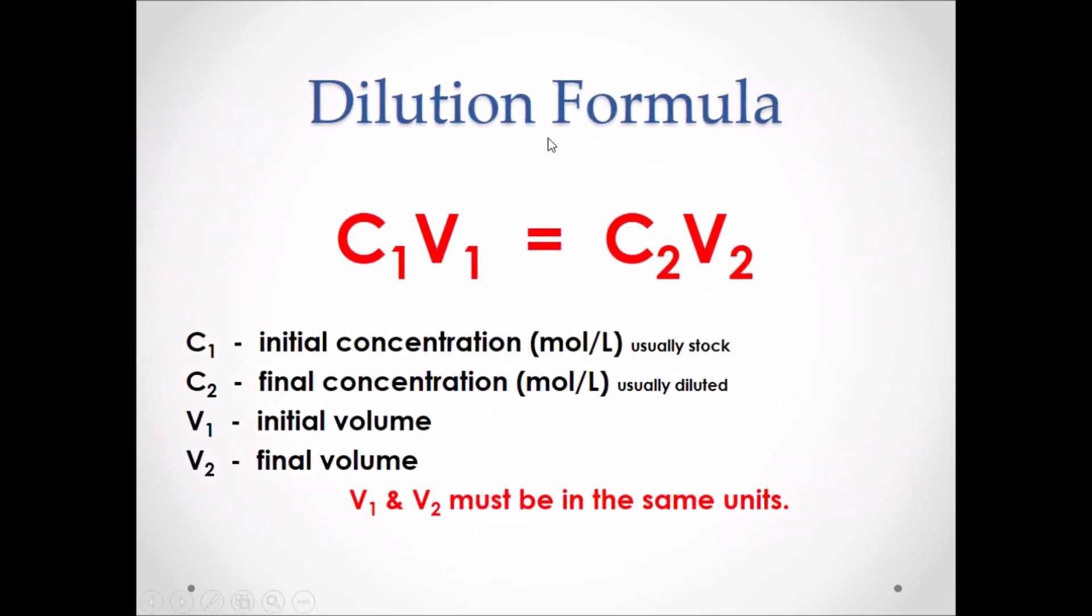Dilution formula is C1 times V1 equals C2 times V2. C1 is the initial concentration in moles per liter. This usually refers to the stock solution. This is the solution that you want to make. It will be the diluted solution.